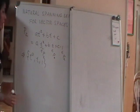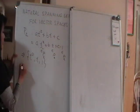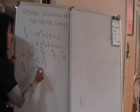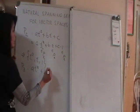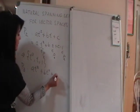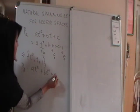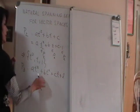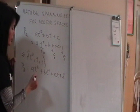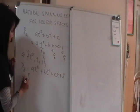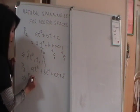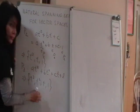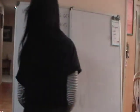If you have P₃ instead — polynomials of degree 3 or less — an arbitrary element looks like at³+bt²+ct+d, where a, b, c, d are any real numbers. Then a natural spanning set for P₃ is {t³, t², t, 1}.